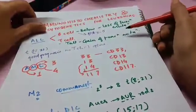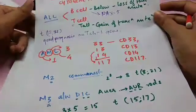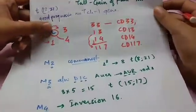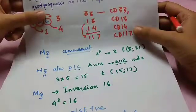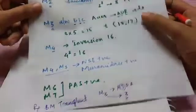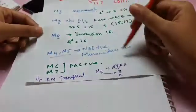and the loss of function, gain of function mutation genes, translocation T21 associated with good prognosis, and AML, the cytogenetics, the CD markers involved, and the different types of AML and the translocations involved. Also, the stains used in AML and treatment roughly.